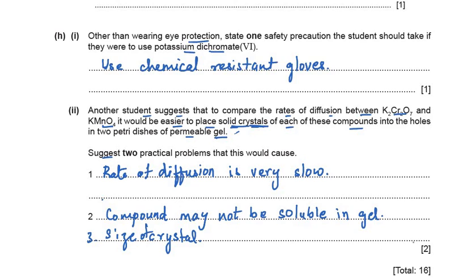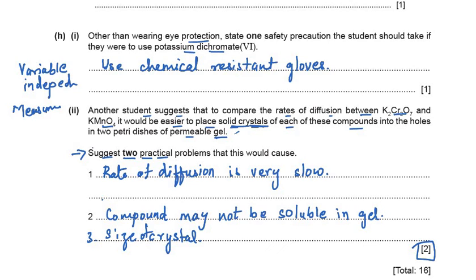In this video we have learnt about independent and dependent variables, what measurements to take and practical problems to consider, as well as plotting a graph and finding a gradient. In our earlier video on question 1 we also covered errors and accuracies. By keeping all these points in mind — how to plot a graph, how to take measurements, and what variables to control — paper 5 becomes much easier to solve.